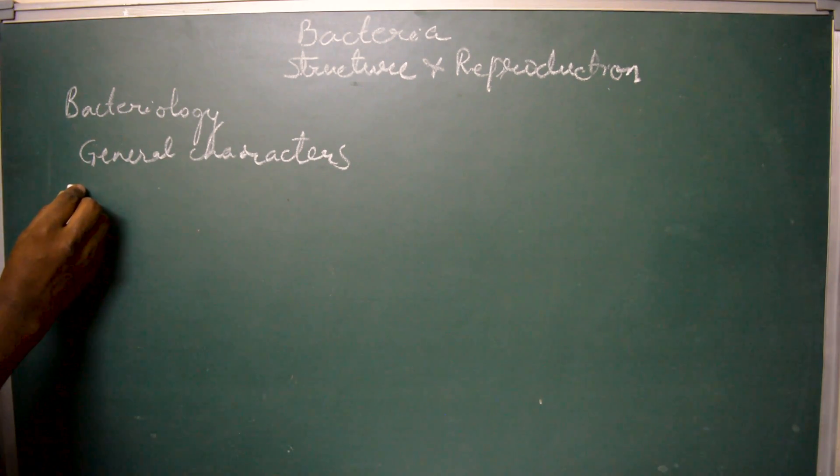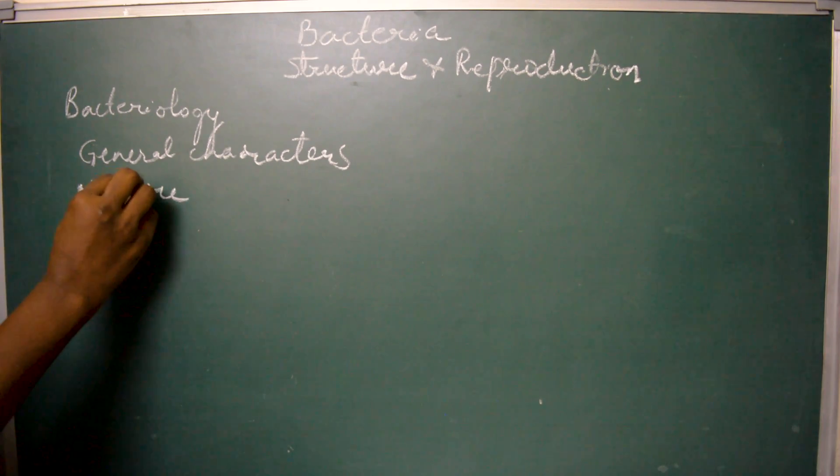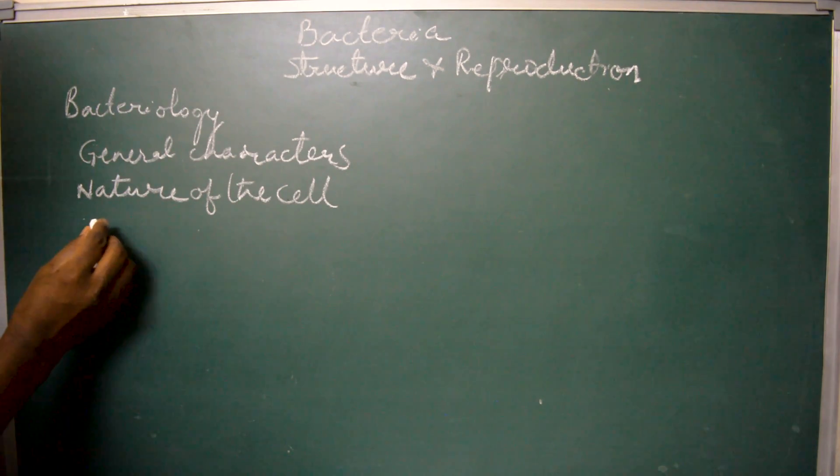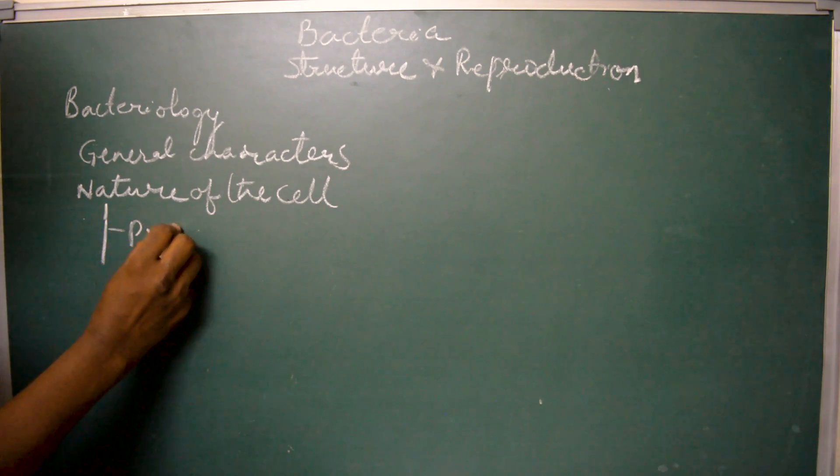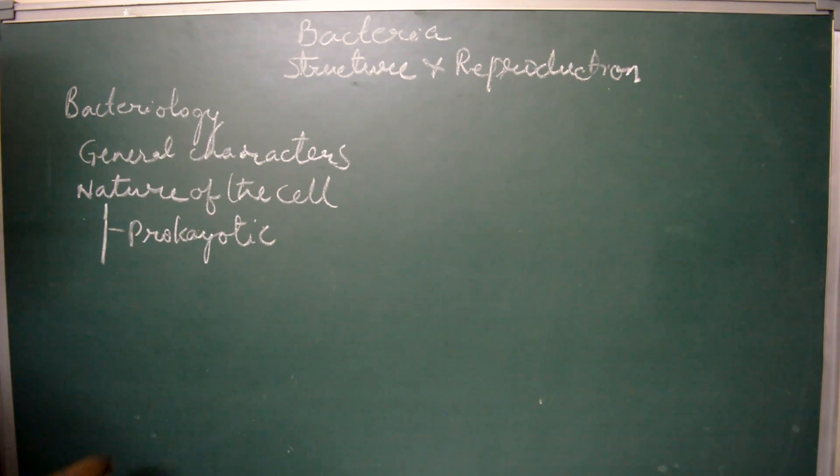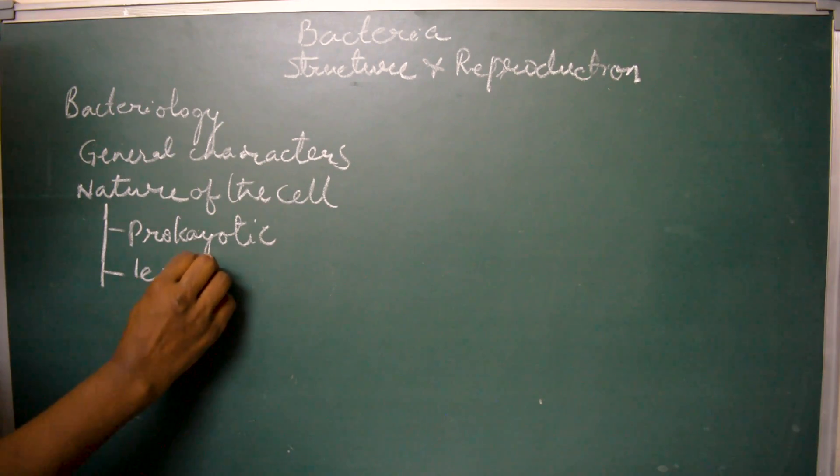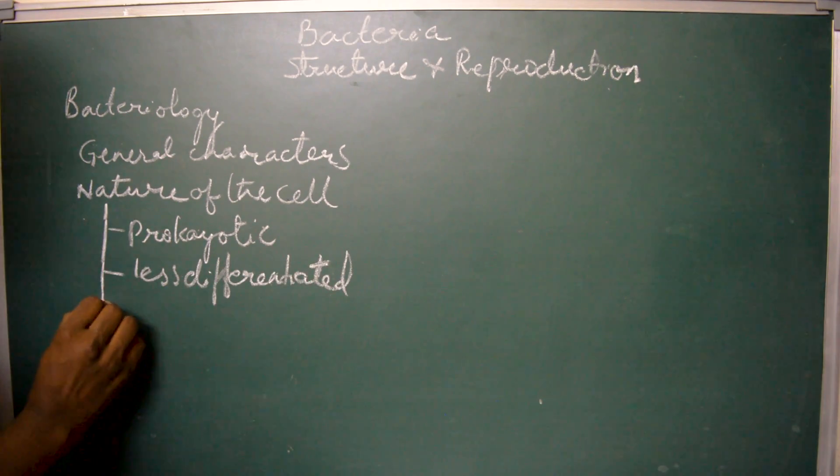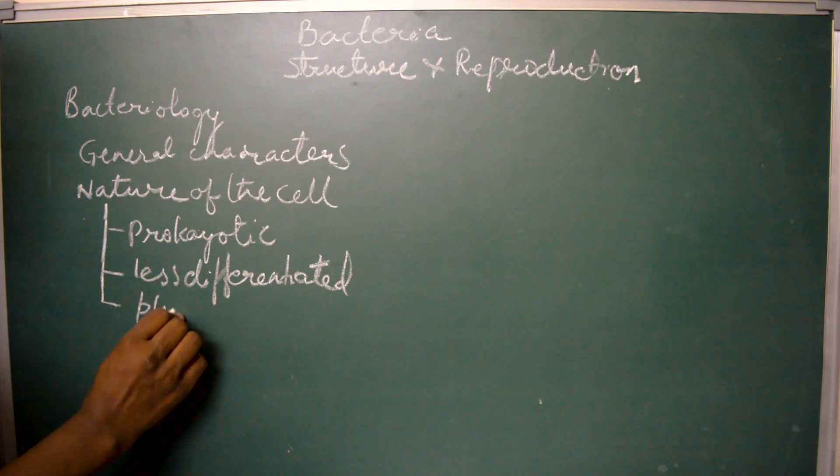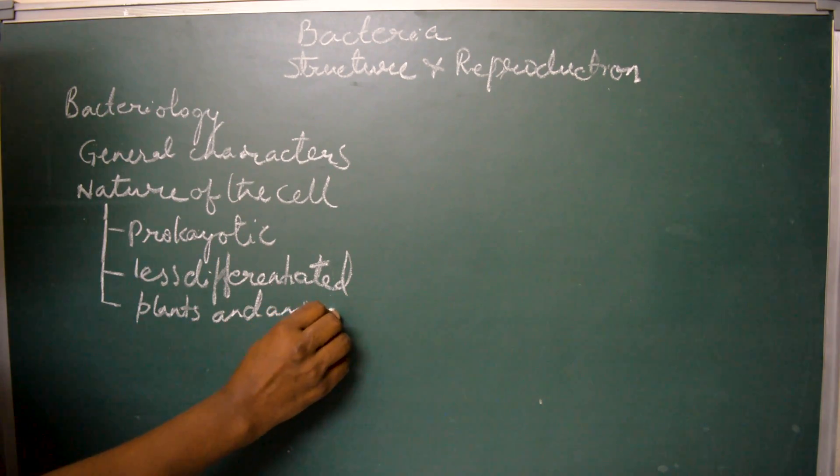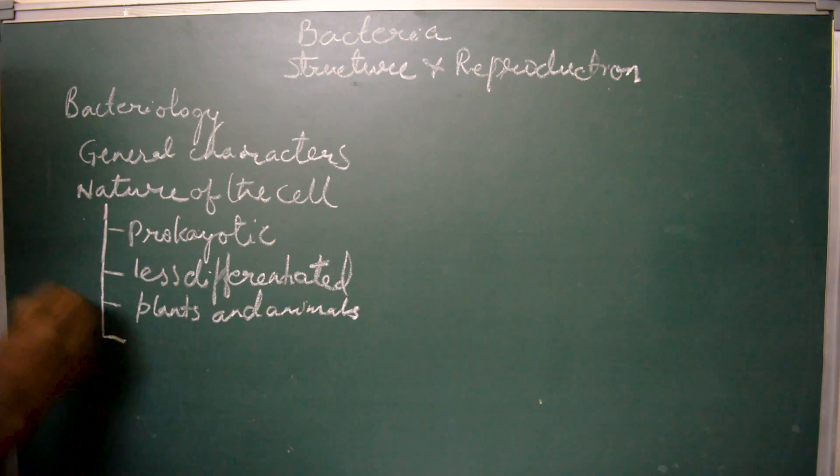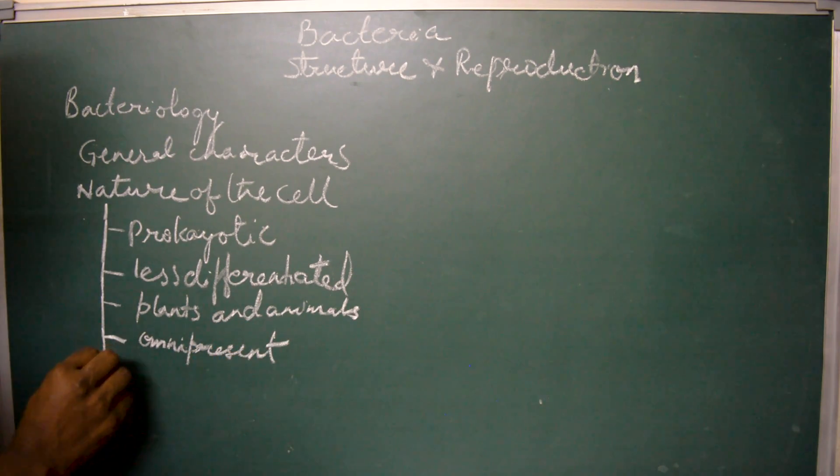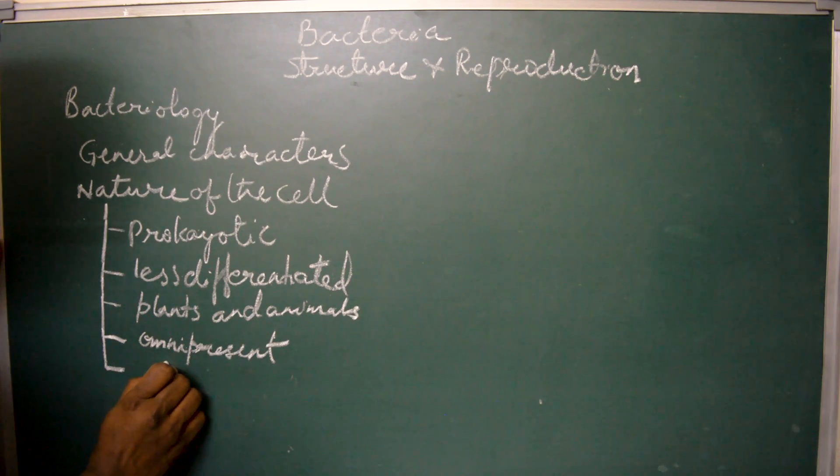Let us start with the bacterial cell nature. Bacterial cells are prokaryotic, they are less differentiated, have both the characters of plants and animals and are omnipresent. These are placed in a special class called schizomycetes.